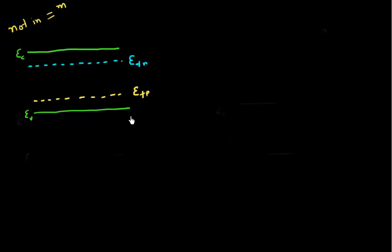So instead of one Fermi level, I have two quasi-Fermi levels. In terms of placement, each of them could be located above or below their respective bands. In this case, the quasi-Fermi level for electrons is located below the conduction band, and the quasi-Fermi level for holes is located above the valence band.